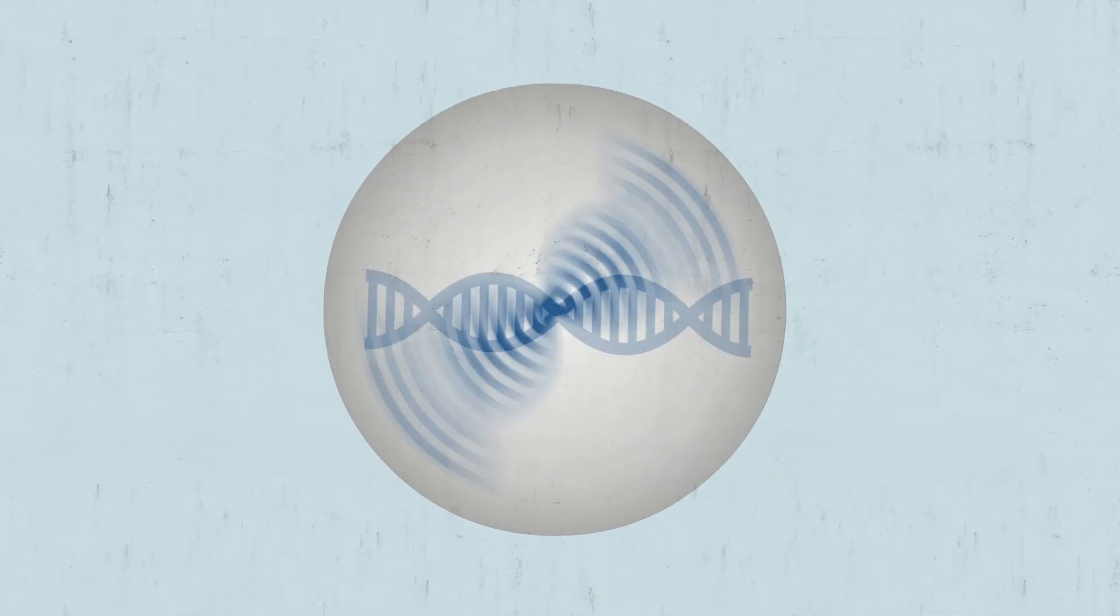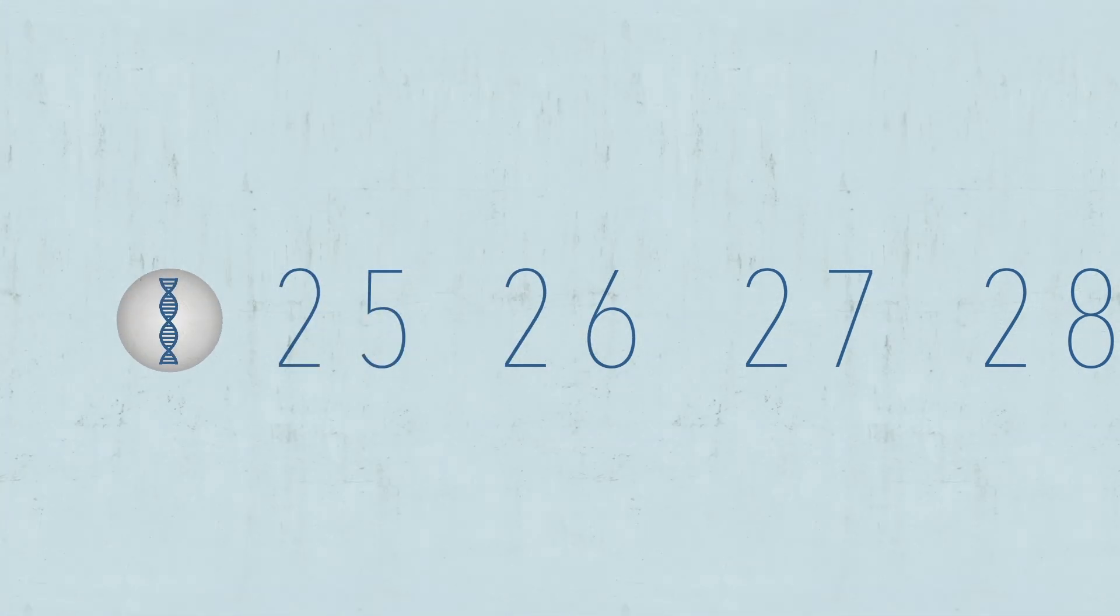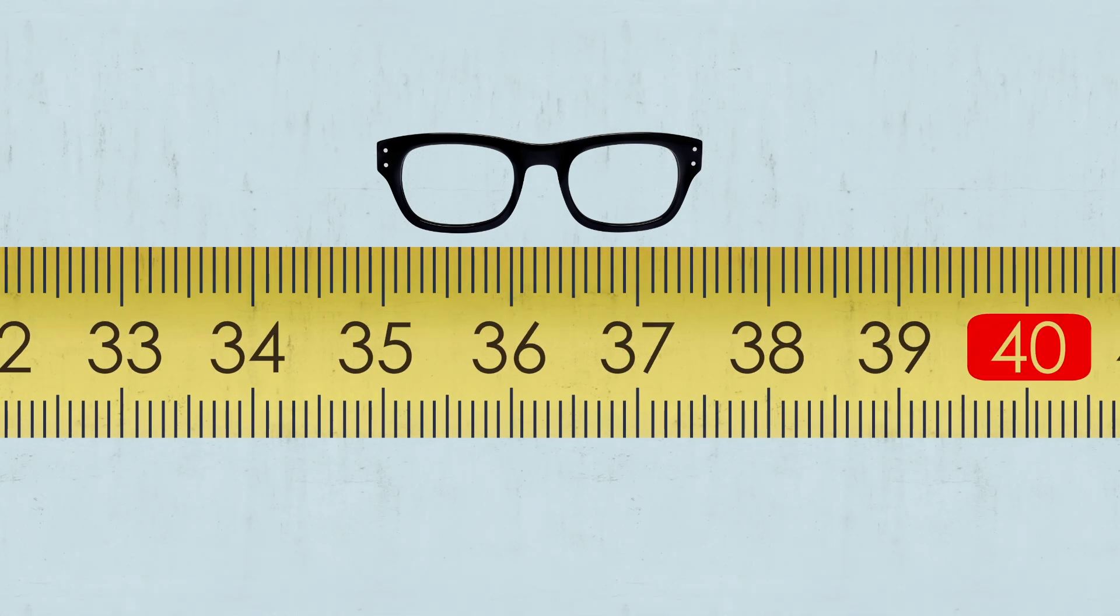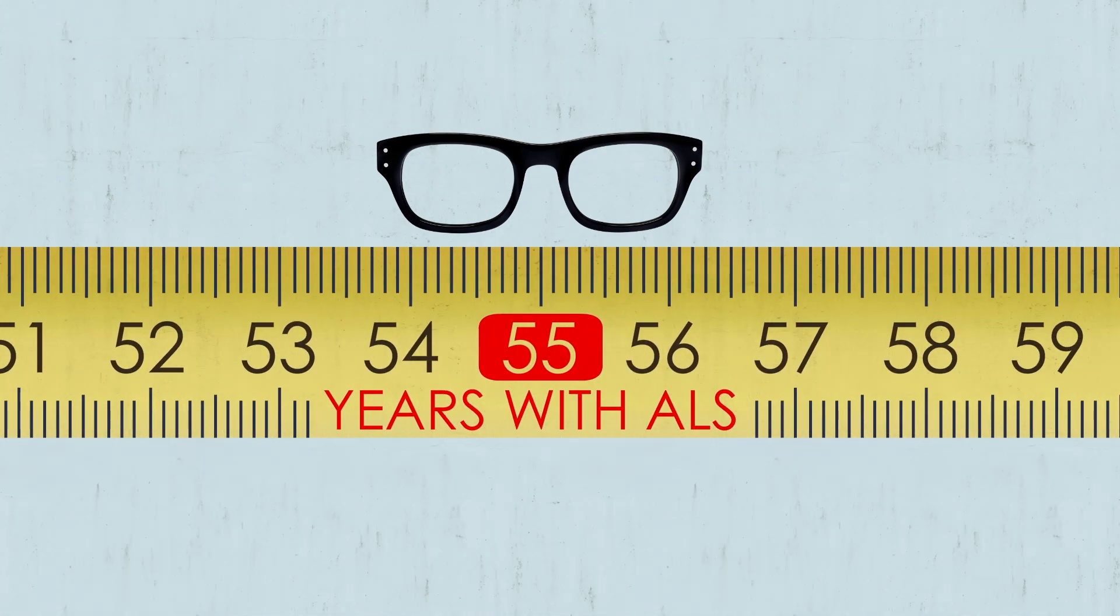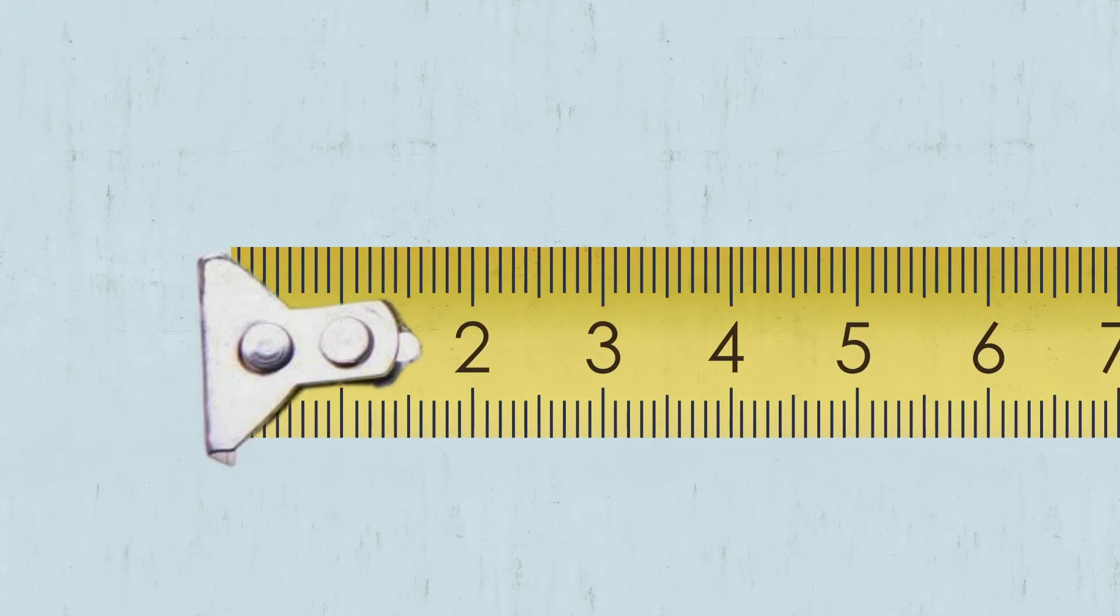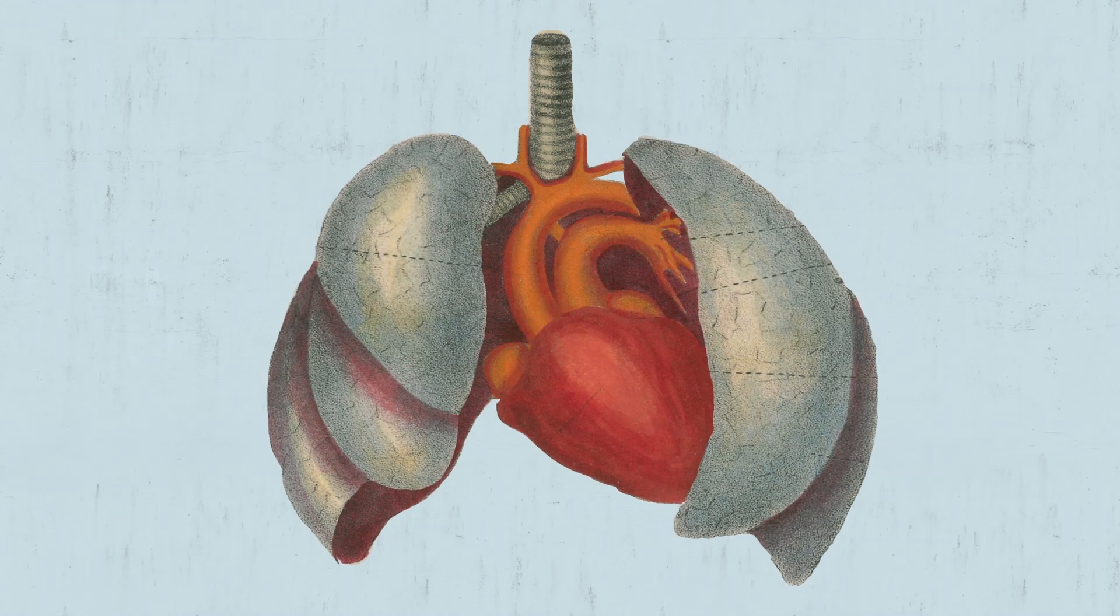The symptoms typically first appear after age 40, but in some rare cases, like Hawking's, ALS starts earlier in life. Hawking's case was also a medical marvel because of how long he lived with ALS. After diagnosis, most people with the disease live between two to five years before ALS leads to respiratory problems that usually cause death.